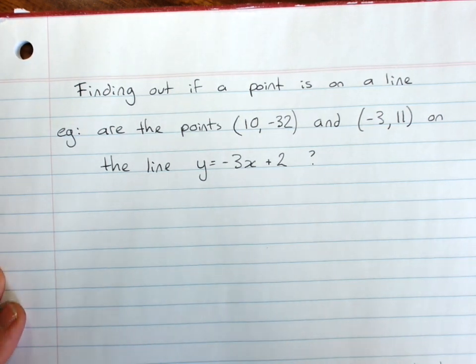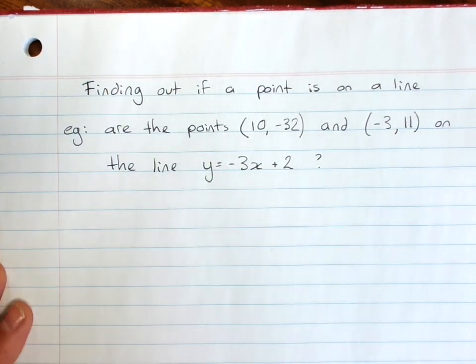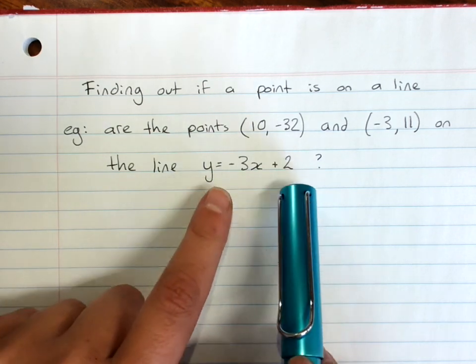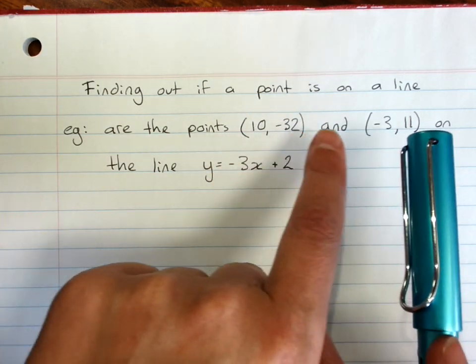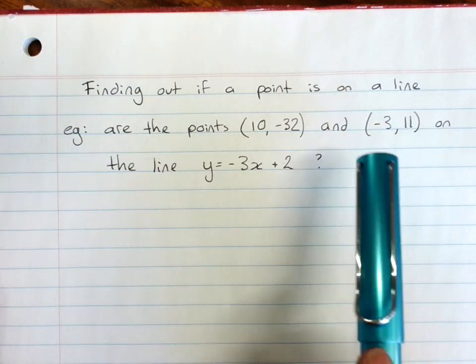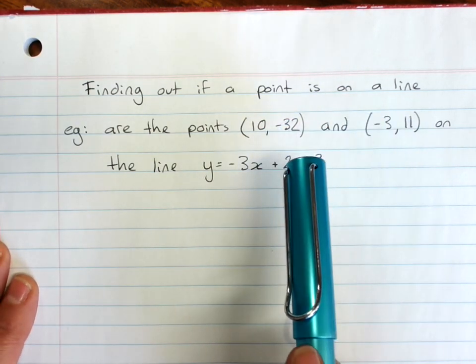Finding out if a point is on a line. This sort of question gives us the equation of a straight line and a point, or in this case two, and asks are these points on this line?